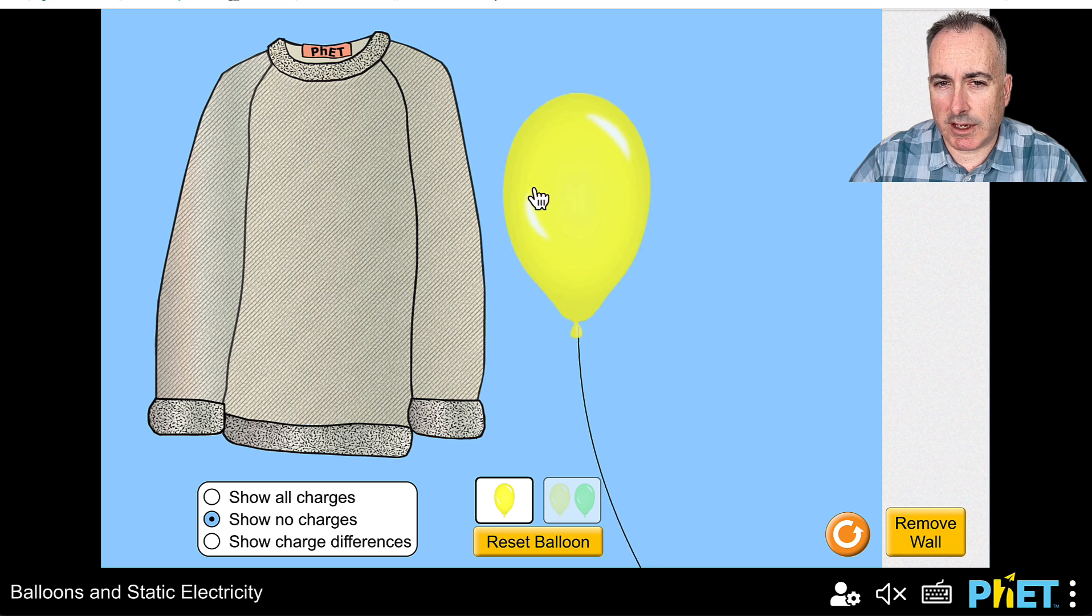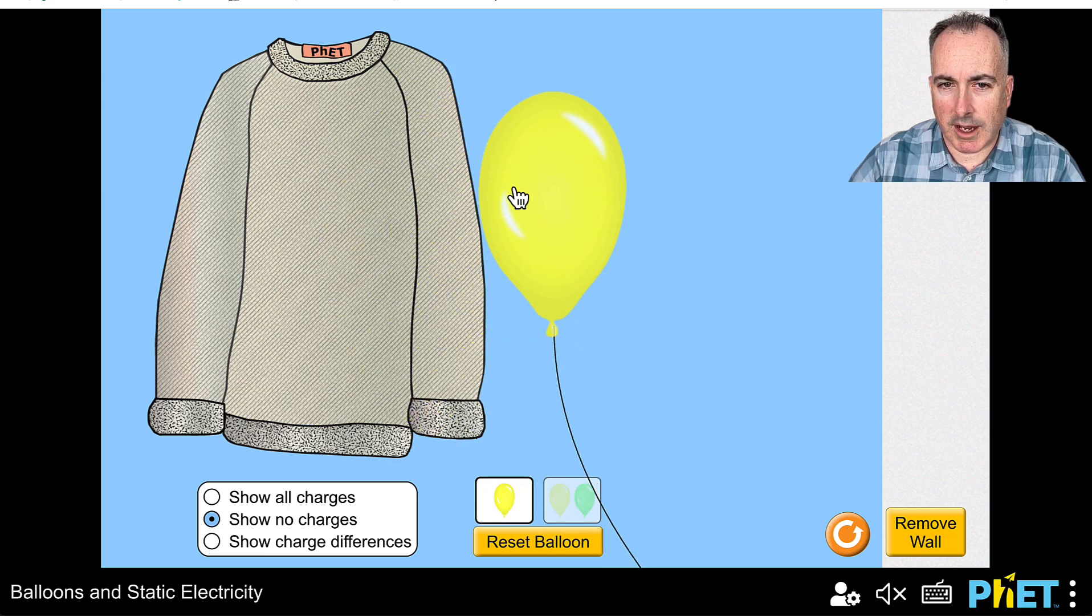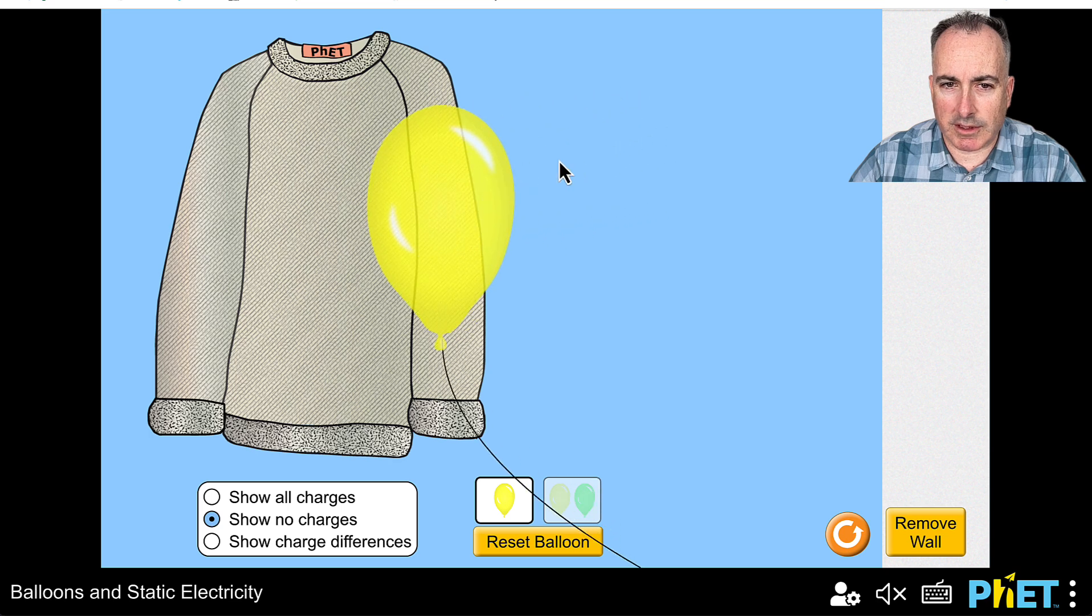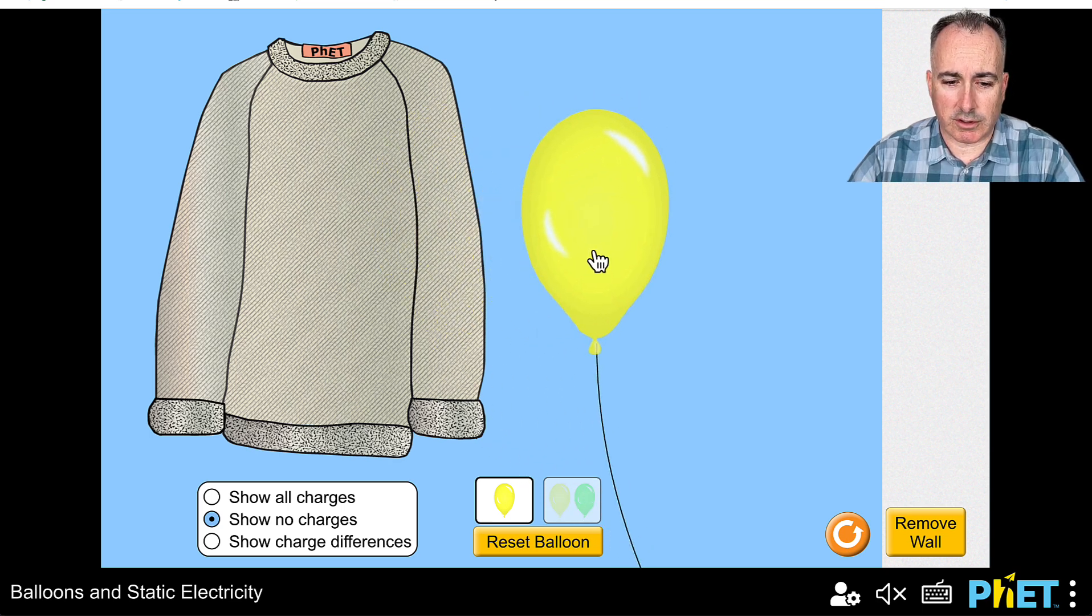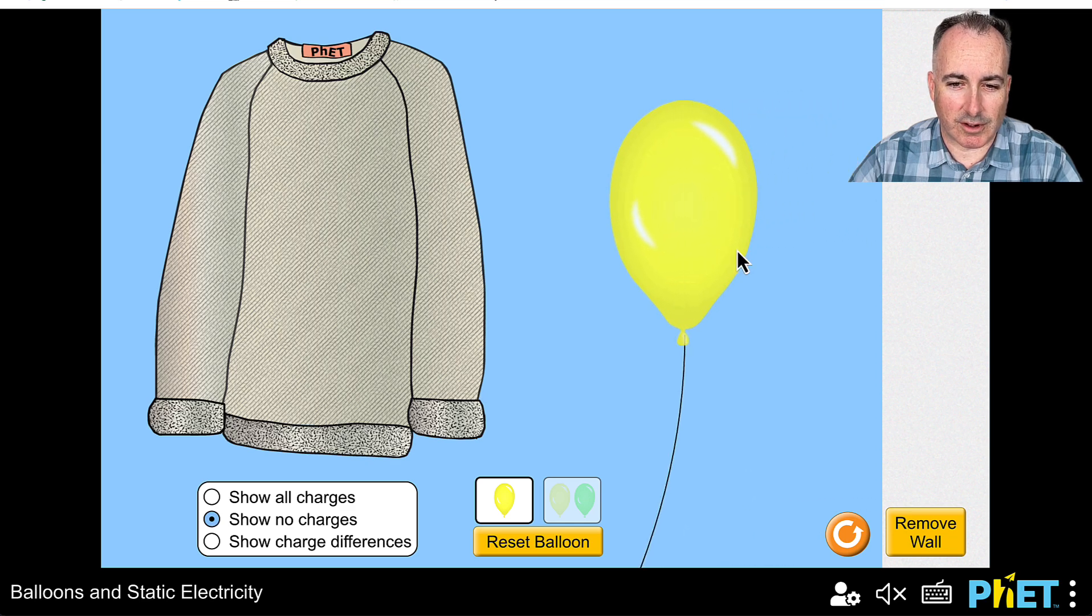And yet, have you ever tried doing this? You take a balloon, and then you sort of rub it up against your shirt, for example. And now what happens? If I let it go now, notice it's actually going to go towards the shirt. I can do it again. So it goes towards the shirt. Also, by the way, if I hold it near enough to the wall, it actually could stick to the wall as well.